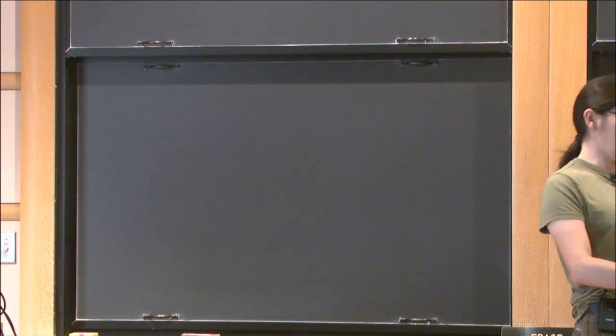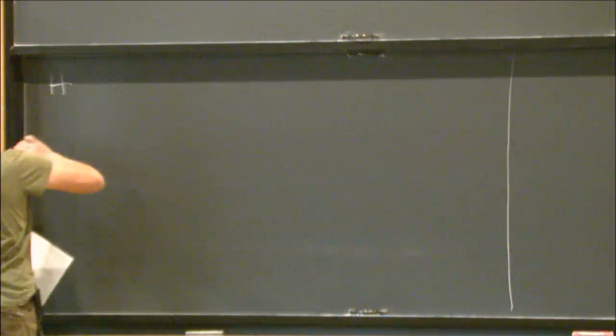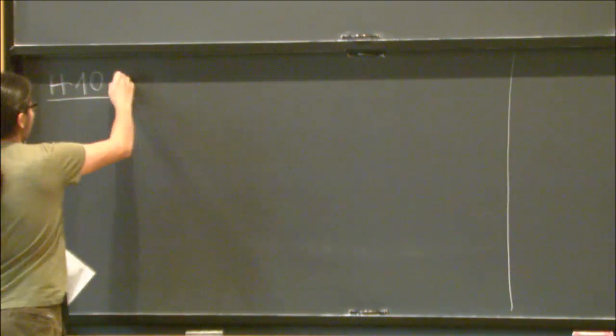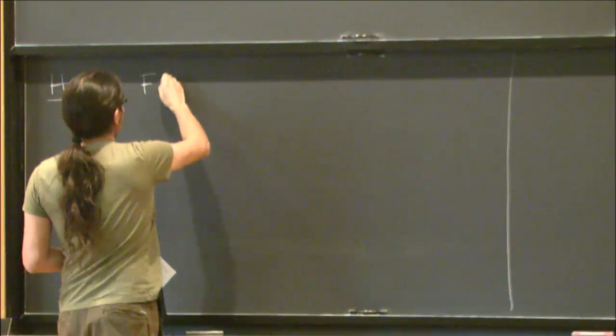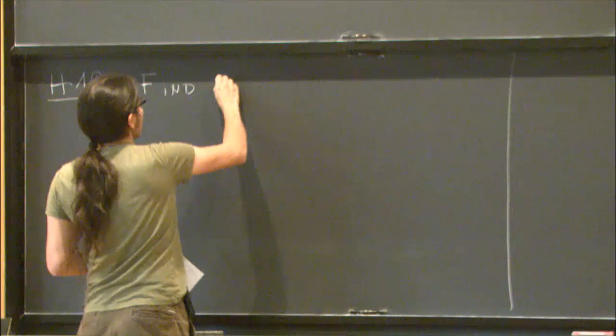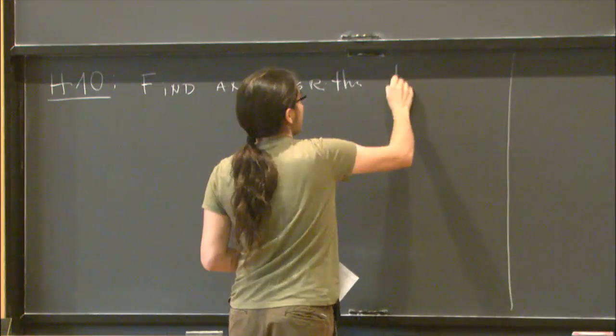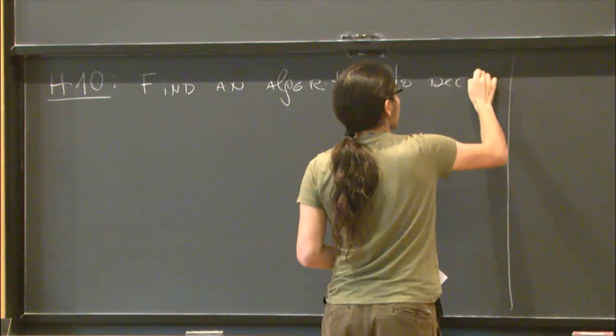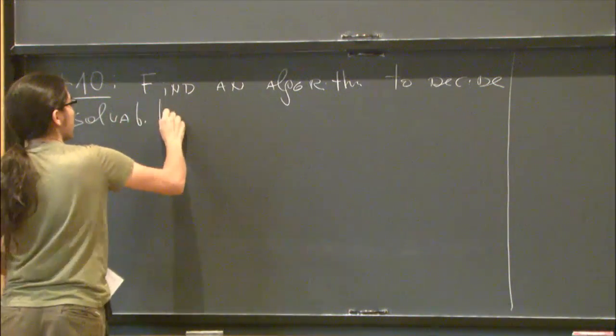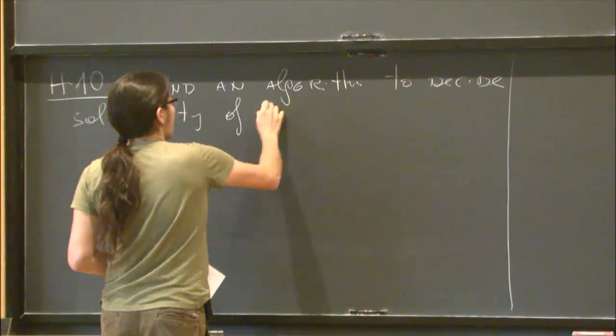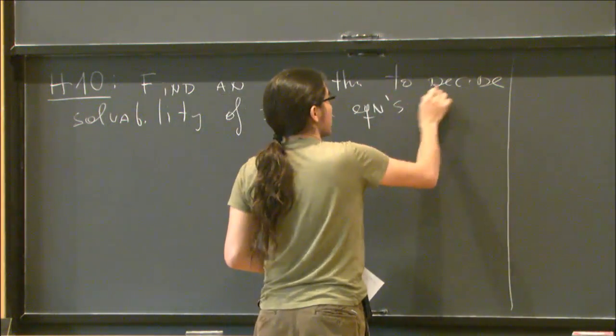Thank you for the opportunity to talk here. Let me begin by recalling the statement of a problem that is very familiar to you, which is Hilbert's 10th problem from 1900. Let me formulate this as: find an algorithm to decide solvability of Diophantine equations over the integers.